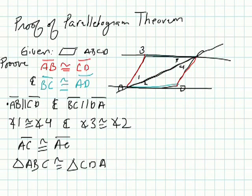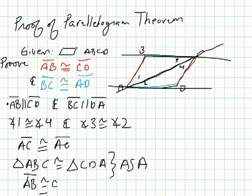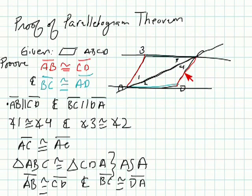How do we know that? Angle-side-angle: angle 4, side, and angle 2 is equal to angle 1, side, and angle 3. Since we have two triangles that are congruent to each other, we can say that AB is congruent to CD, and that BC is congruent to DA — which is what we set out to prove. We did that by showing these two triangles are congruent, and therefore the corresponding parts are also congruent.